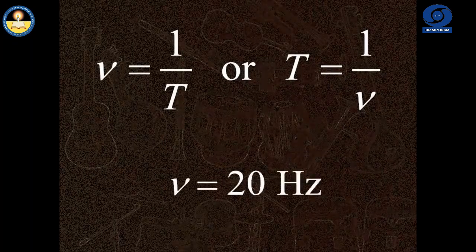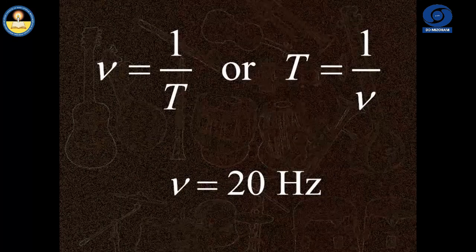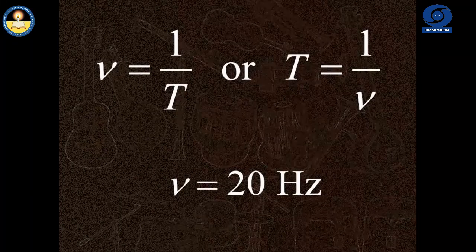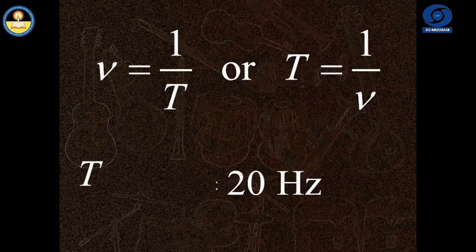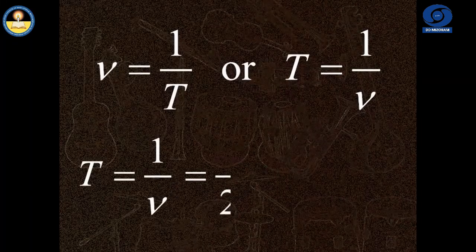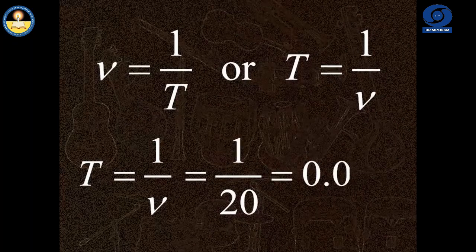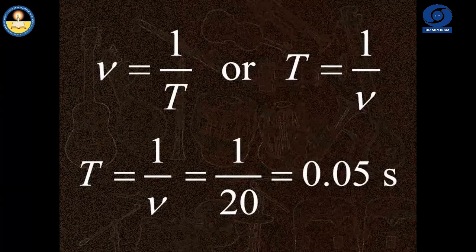In the similar way, if the frequency of a wave is 20 hertz, then the time period of the wave is 0.05 seconds.